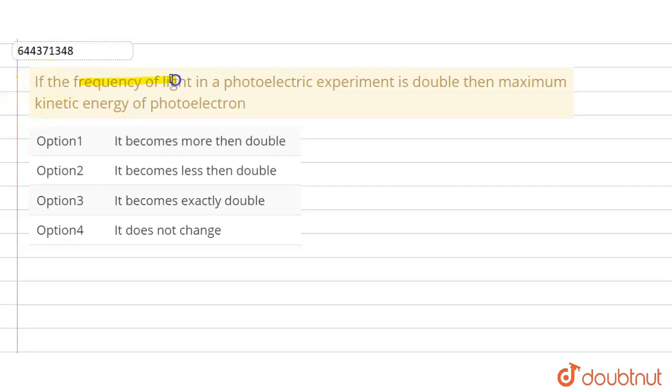If the frequency of light in a photoelectric experiment is double, then maximum kinetic energy of photoelectron will be?